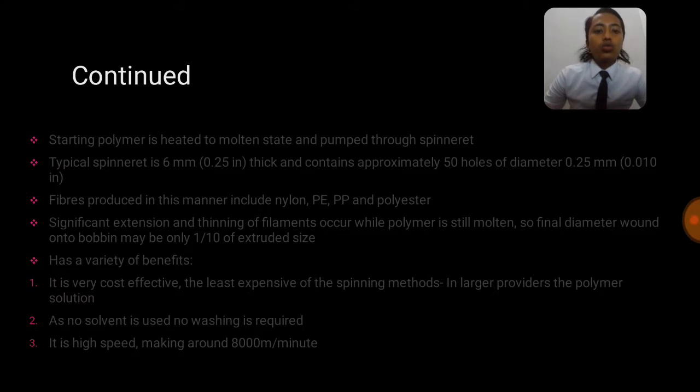The starting polymer is heated to molten state and pumped through the spinneret. Typical spinneret usually from 6mm or 0.25 inch thick and contains approximately 50 holes of diameter 0.25mm or 0.01 inch. Fiber produced in this manner includes nylon, polyethylene and polyester. Significant extension and thinning of filaments occur while polymer is still molten so that the final diameter wound onto bobbin may be only 1 to 10 ratio of extruded size.